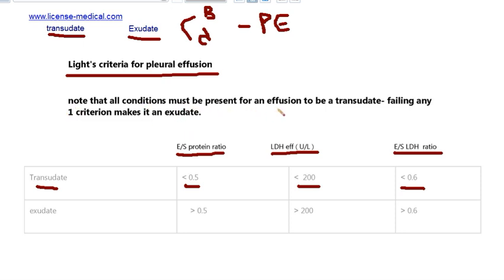All these parameters must be present for an effusion to be a transudate. If you find only one of these criteria is not met, it makes it an exudate effusion. Exudate has effusion over serum protein ratio more than 0.5, LDH value more than 200, and effusion over serum LDH ratio more than 0.6.